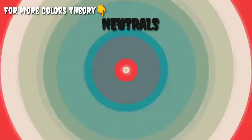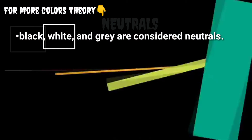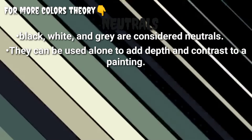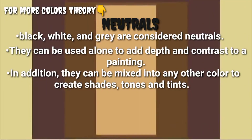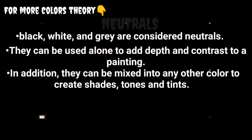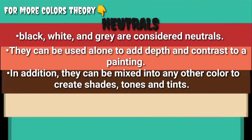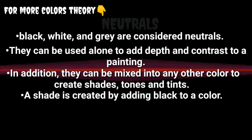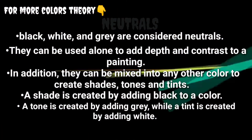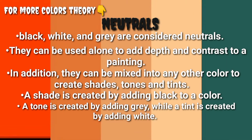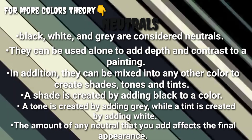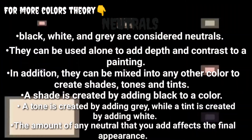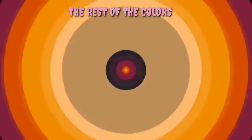For more on color theory — neutrals: black, white, and gray are considered neutrals. They can be used to add depth and contrast to a painting. They can also be mixed into any other color to create shades, tones, and tints. A shade is created by adding black to a color, a tone by adding gray, and a tint by adding white. The amount of neutral you add affects the final appearance of the color.